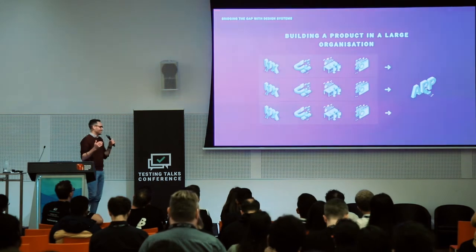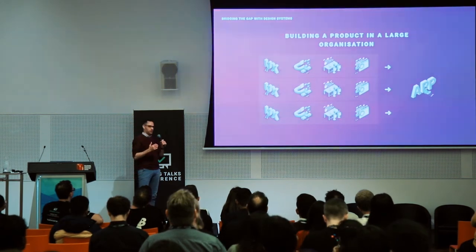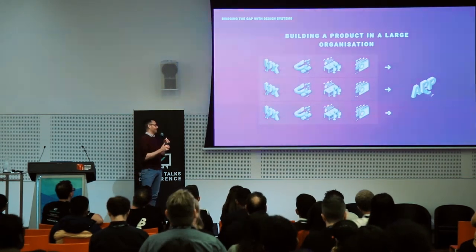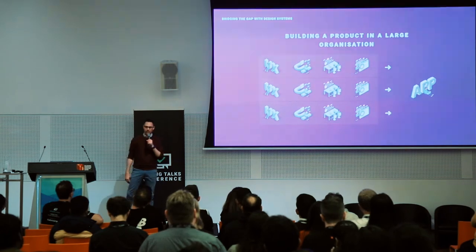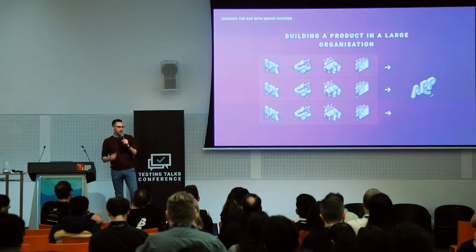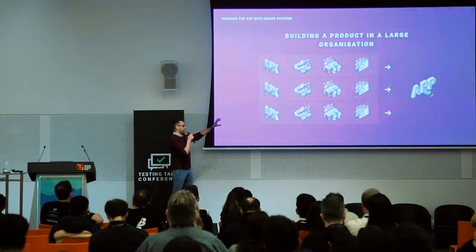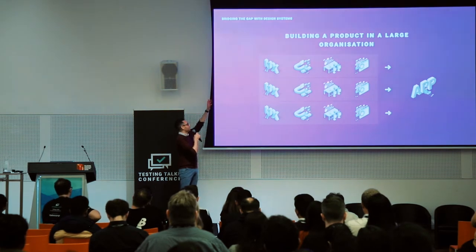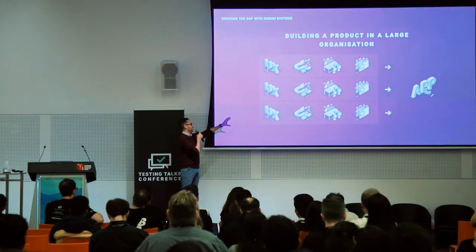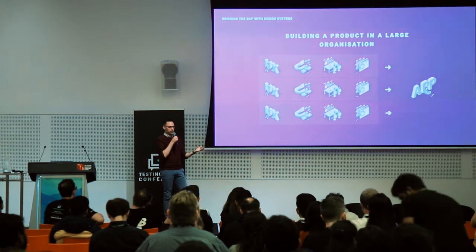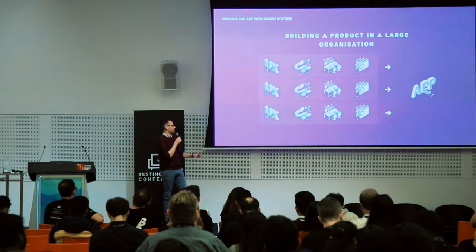This just gets more complicated when you've got bigger organisations with teams running in parallel. Not only do you have trouble within the teams keeping consistency, but also between them. How do you make sure all the UX designers are using the same components? How do you make sure developers are coding in the same way? And how do you make sure QA are testing against one source of truth for all the products?